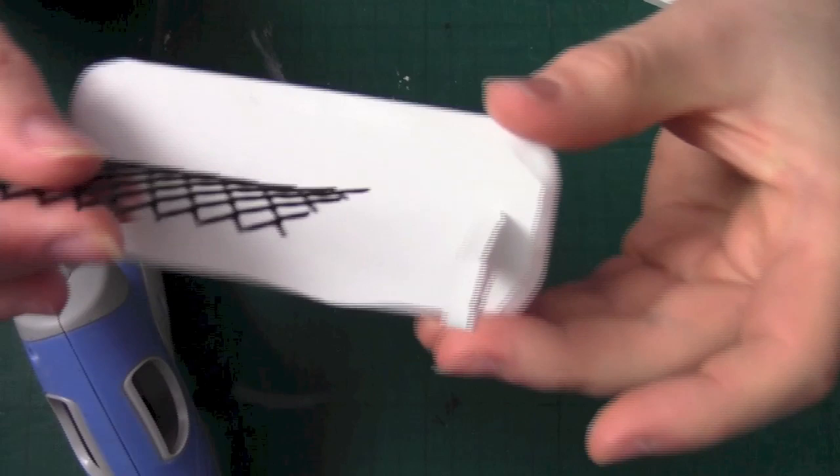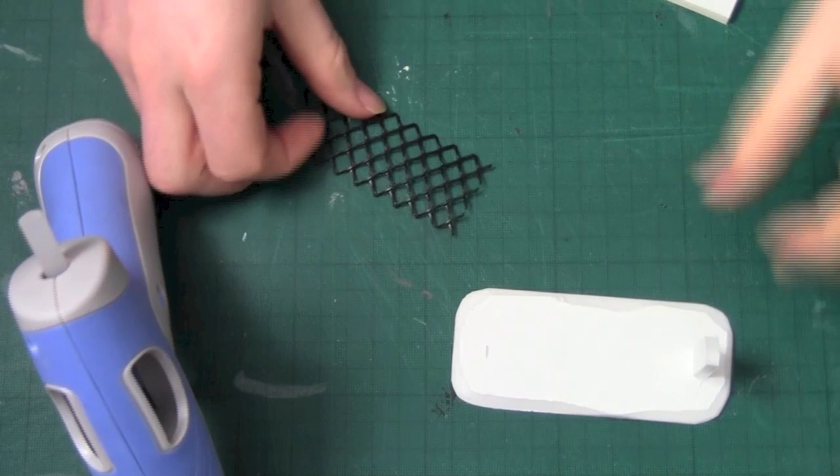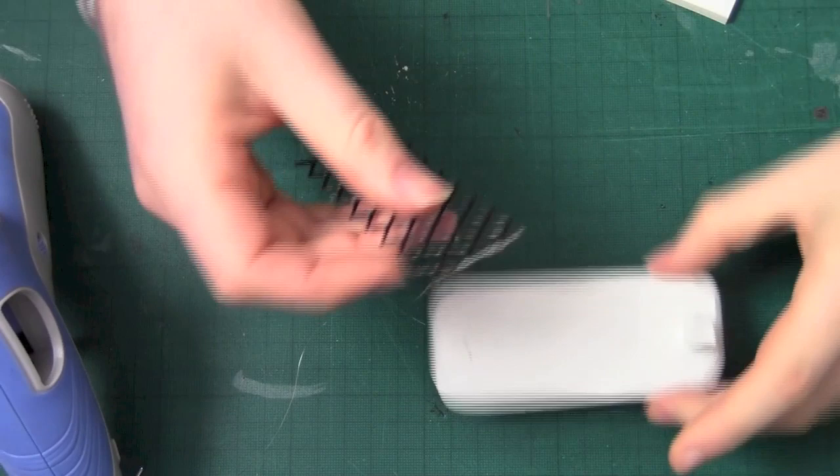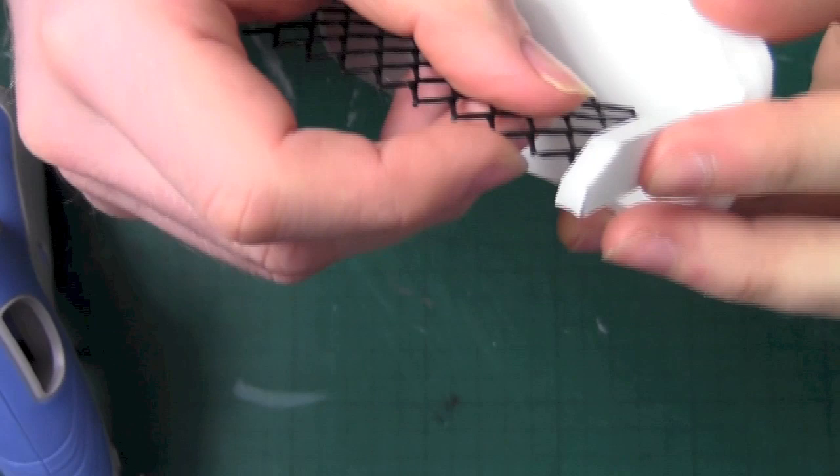Now that we've stuck down one fence post, it's time to work on the fencing. Simply put a long bead of glue onto the piece of mesh and attach it to the centre of the fence post. Leave it there for a couple of seconds just to make sure the bond's been made. And that's one side of the fence made.